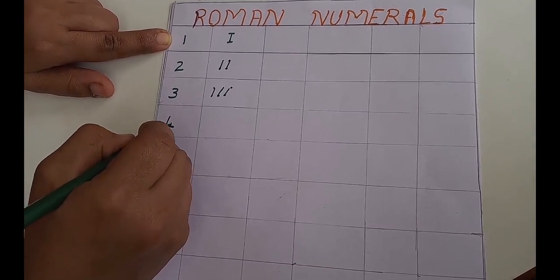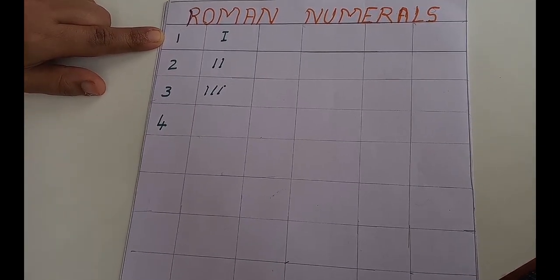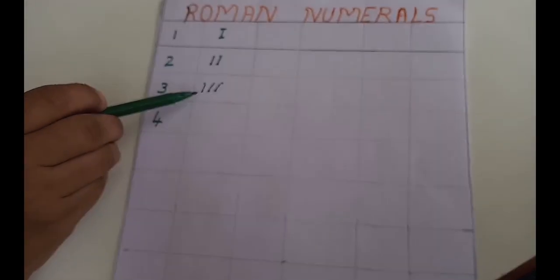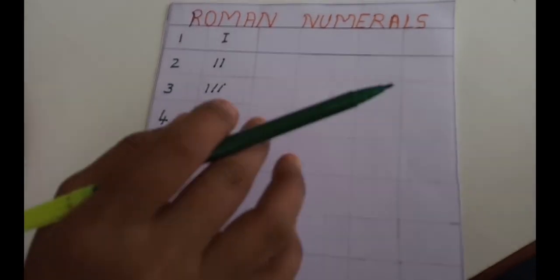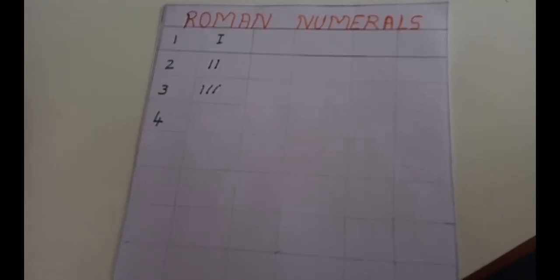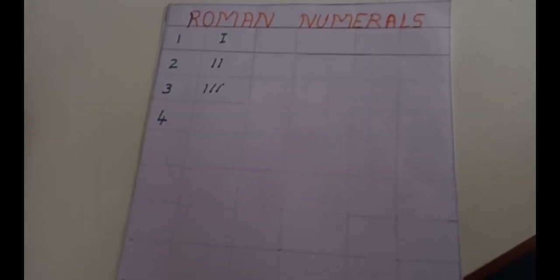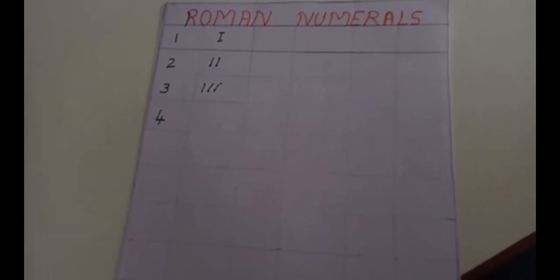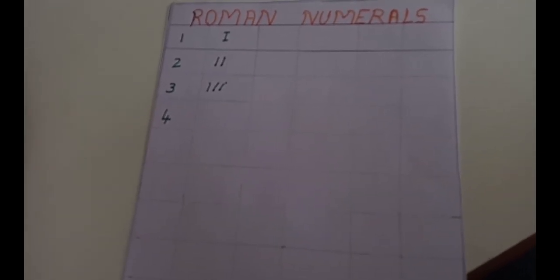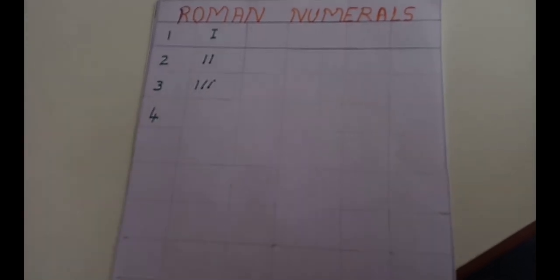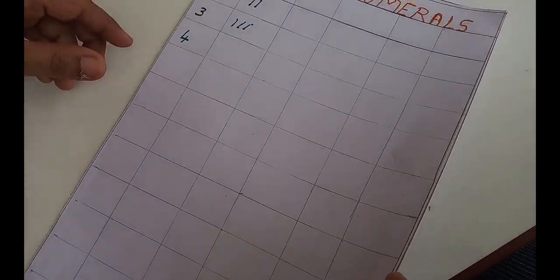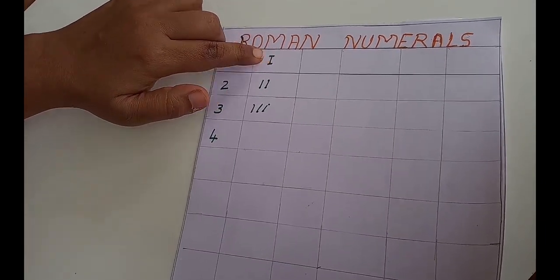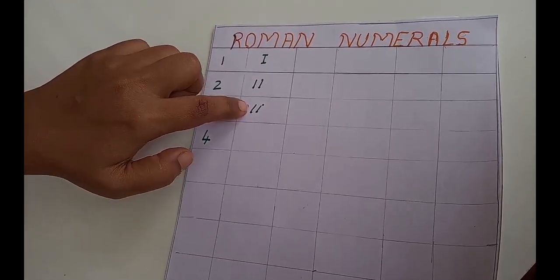For number 4, a rule applies. We cannot repeat I, V, X, L, or C more than 3 times. So we have to use another method for writing 4. To be clear: 1 is I, 2 is II, 3 is III. But for 4, a different rule comes in.